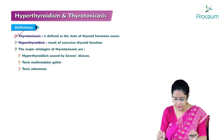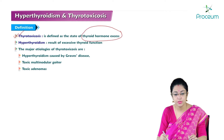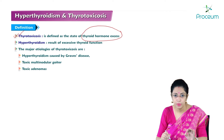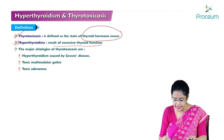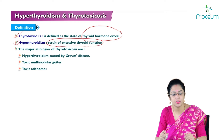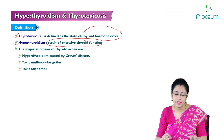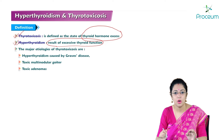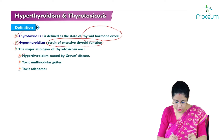Thyrotoxicosis means there is a state of thyroid hormone excess in the blood. Hyperthyroidism is a result of excessive thyroid function. Though there is increased level of thyroid hormone in blood in thyrotoxicosis, hyperthyroidism is not a must for thyrotoxicosis. The major etiologies of thyrotoxicosis are hyperthyroidism caused by Graves disease, toxic multinodular goiter, and toxic adenomas.